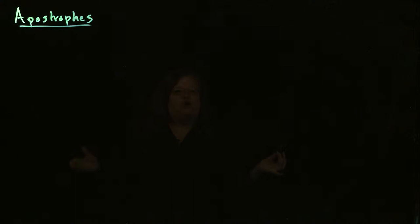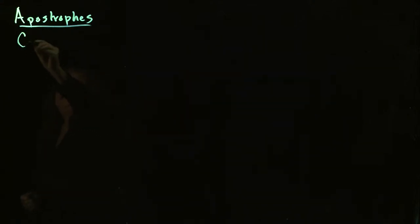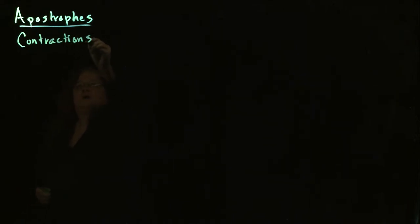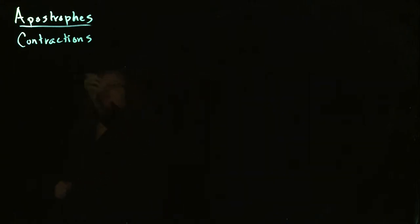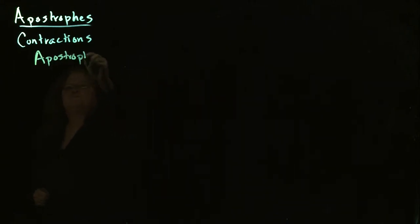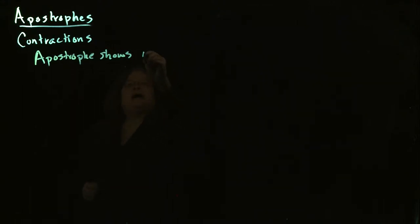The first situation where you do use apostrophes is if you have a contraction. A contraction basically means something has been left out — you've shortened it in some way. So when you're looking at a contraction, the apostrophe very simply just shows where something is left out.